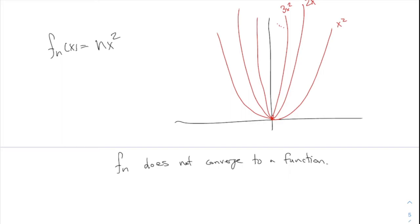Something a little weird: F_n of 0 is always 0 for every N, because N times 0 squared is always 0. So the point X equals 0 is fixed for every function in the sequence — it kind of does converge to something just at that one point. But for all the other points, it doesn't converge to anything. This is a little strange.